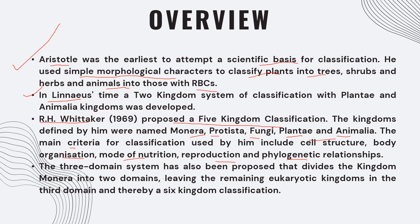A three-domain system has also been proposed, which divides Kingdom Monera into two domains, while the rest of the eukaryotic kingdoms form the third domain.